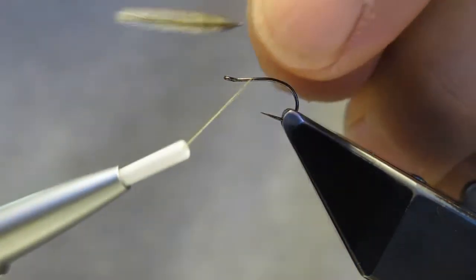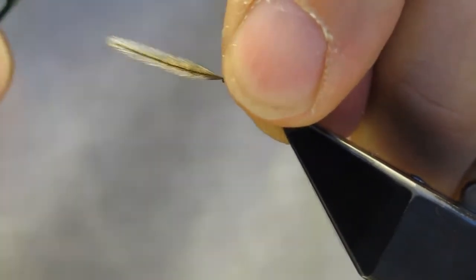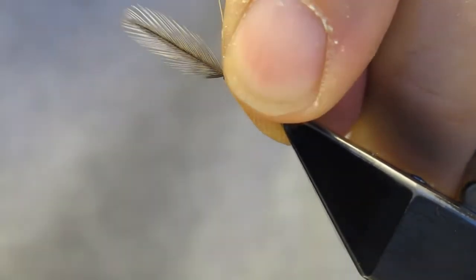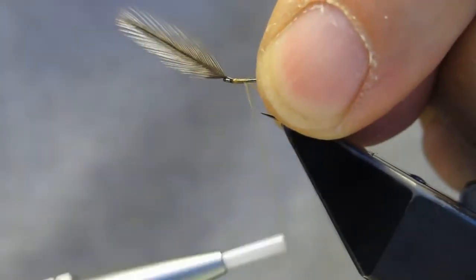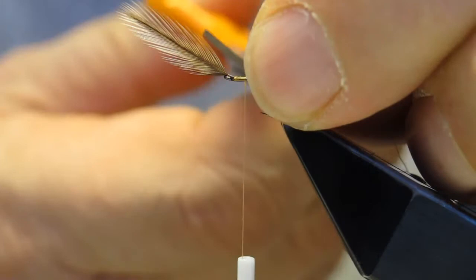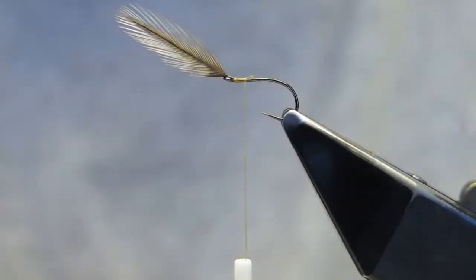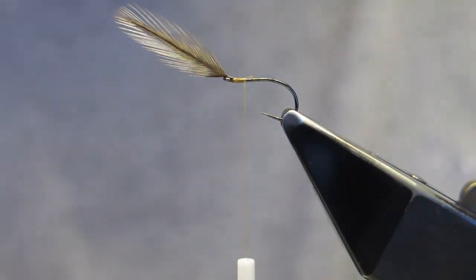To start the fly, we'll tie in the hackle, in this case a whiting cock to leon hen hackle. Our thread is now in the thorax position and it doesn't move from there.